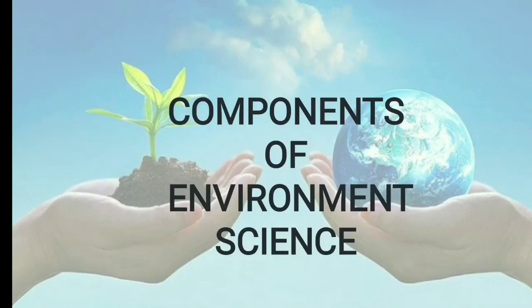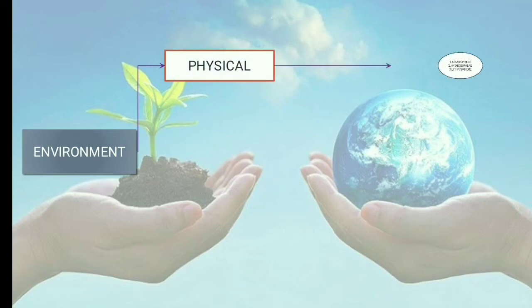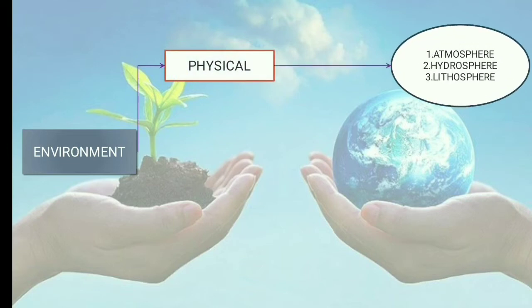Let's see the components of environmental science. First, environment is made up of the physical environment, which includes atmosphere, hydrosphere, and lithosphere. The atmosphere is the blanket of gases surrounding the earth. The hydrosphere is the combined mass of water found on, under, and above the surface of the planet. The lithosphere is the solid outer part of the earth.